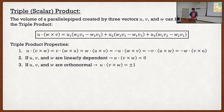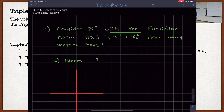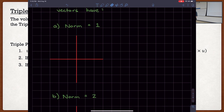Let's do some examples. The quiz has three questions, each dealing with one of those formulas we just discussed. The first question says, consider R2 with the Euclidean norm. Part A asks: how many vectors have a norm equal to one? That means the length of the vector must equal one.